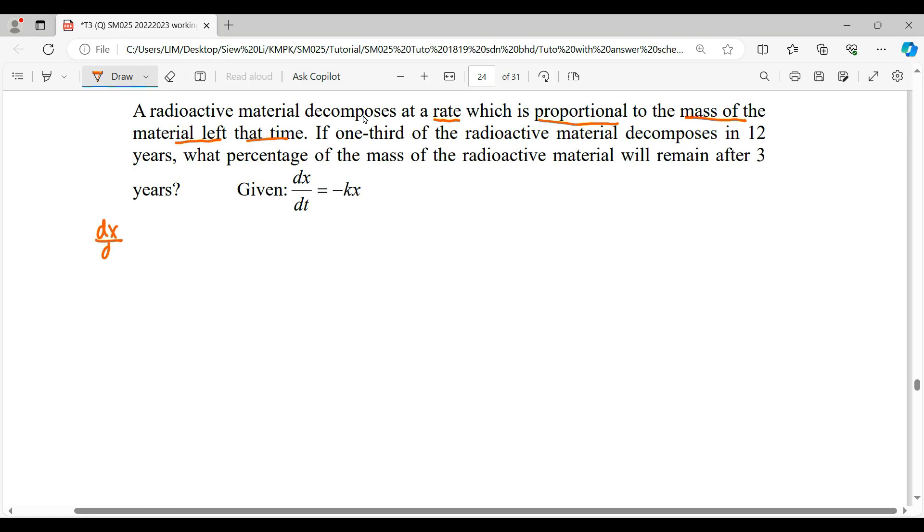So from here, we can identify this model which is radioactive material decomposition. Given that this rate of change is negative kx, where x in terms of time represents the remaining mass, because it's the mass of the material left. So remaining mass of the radioactive material.